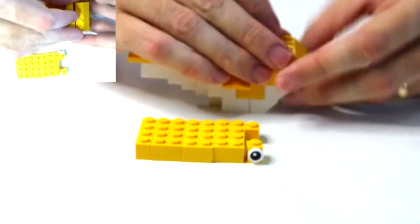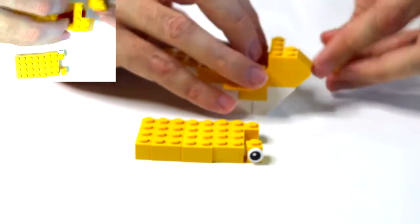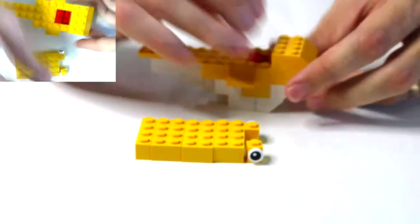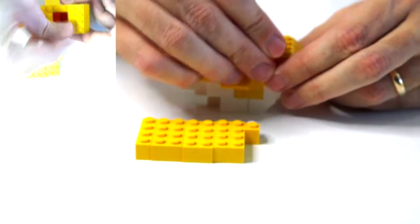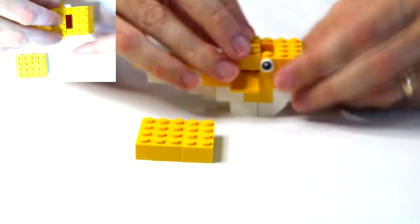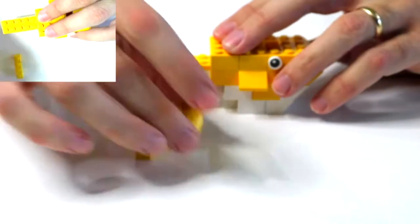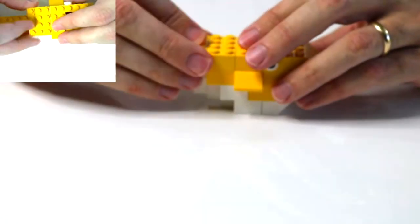So we're going to span the gap here with these. And this is a little bit delicate piece, but that's okay. Then the eyes go on. Then the two by four, two by four, and a one by four.